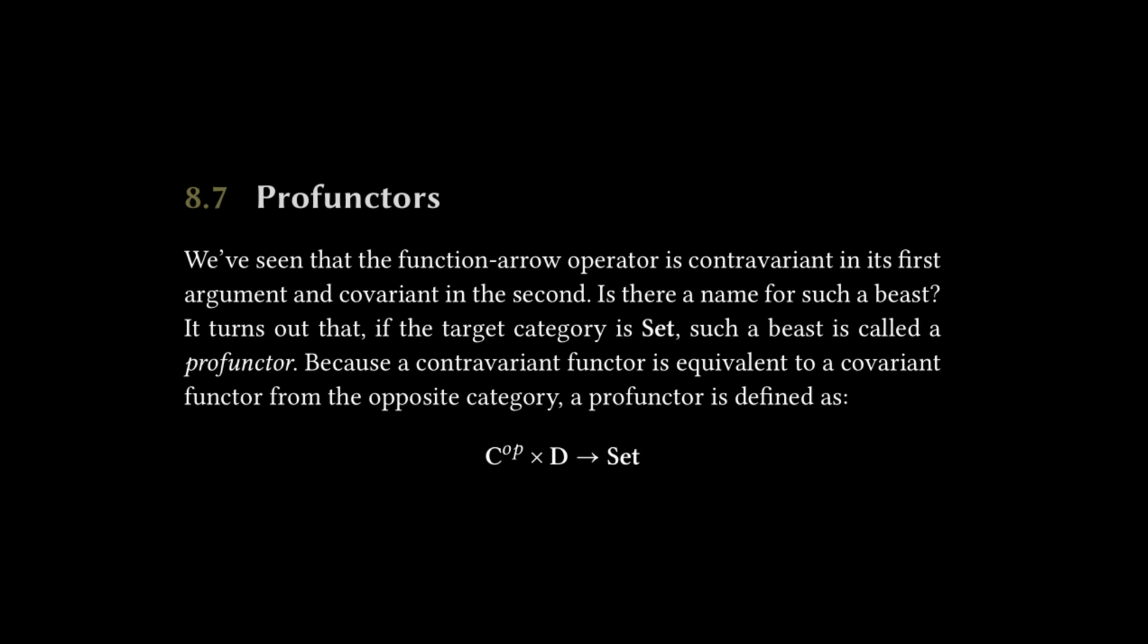So this is just a lot of words that don't make sense to explain that if you have both basically contramap and fmap, aka, you are composing both to the front and the back, you have a profunctor. So it's the combination of a bifunctor and a contravariant functor, which is what was shown in the George Wilson diagram from the functor family.